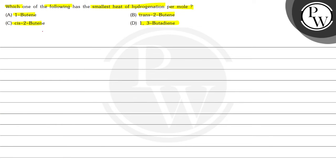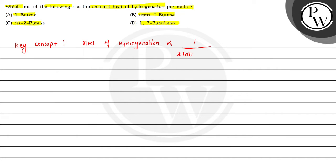For this question, we can write here the key concept: heat of hydrogenation. Heat of hydrogenation is inversely proportional to the stability of the alkene. So there is an inverse relationship between stability of alkene and heat of hydrogenation.